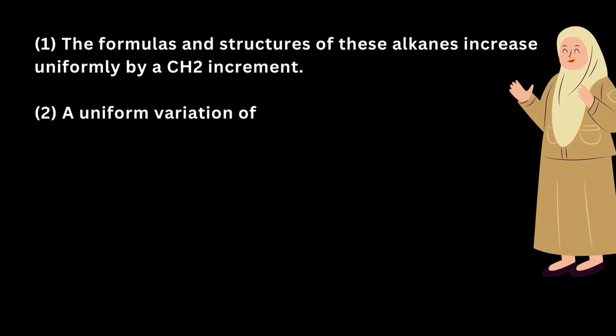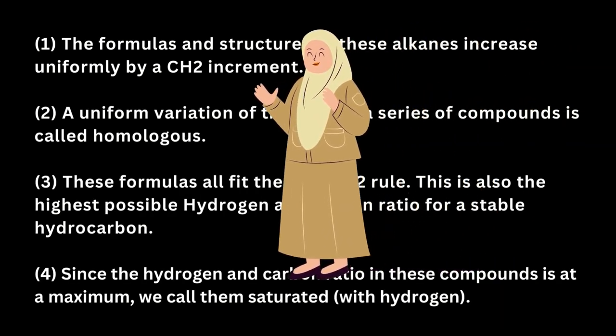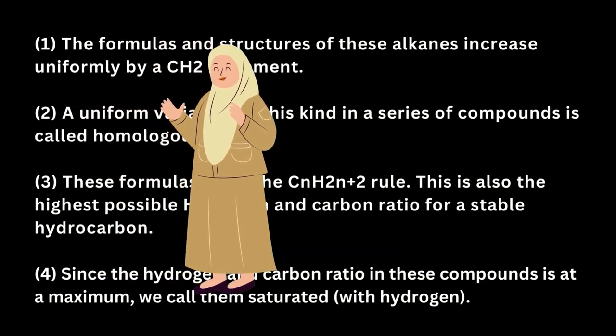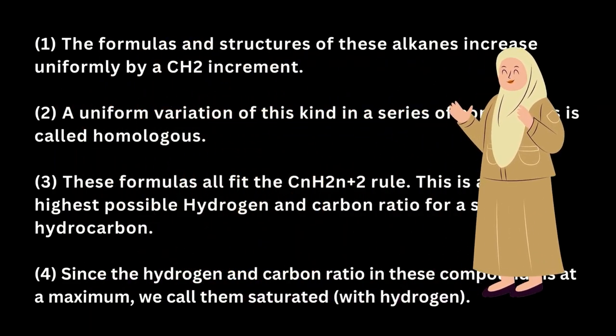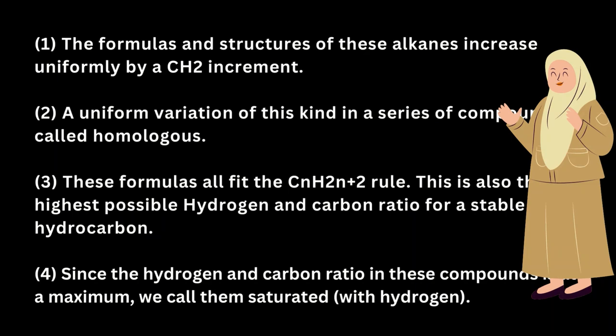The formulas and structures of these alkanes increase uniformly by a CH2 increment. A uniform variation of this kind in a series of compounds is called homologous. These formulas all fit the CnH2n+2 rule, which is also the highest possible hydrogen-to-carbon ratio for a stable hydrocarbon. Since the hydrogen-to-carbon ratio in these compounds is at a maximum, we call them saturated with hydrogen.